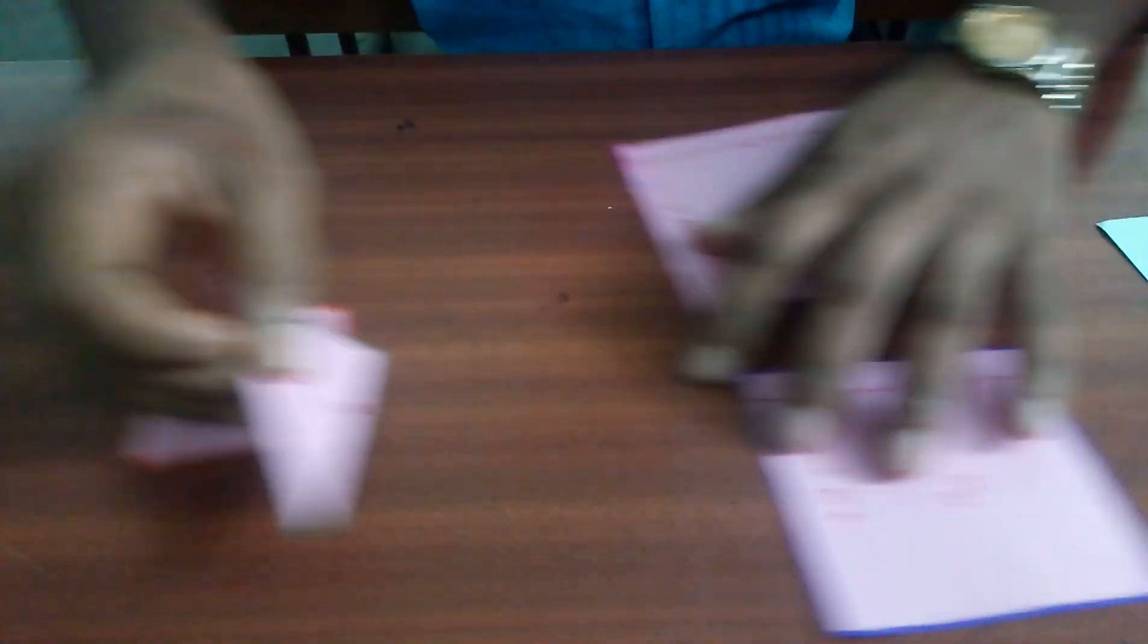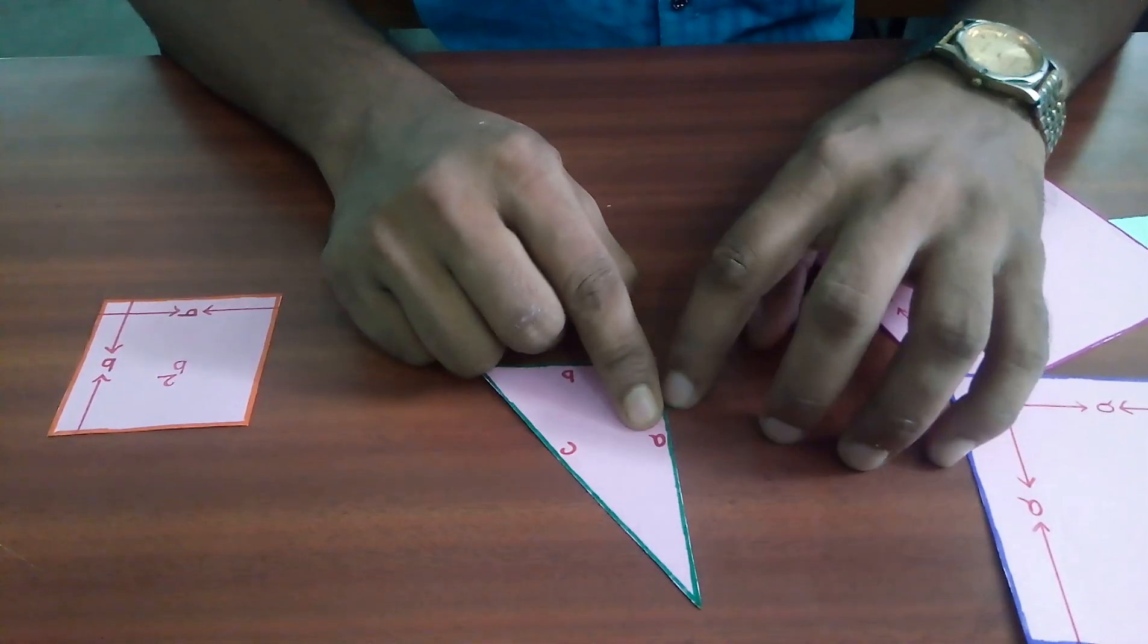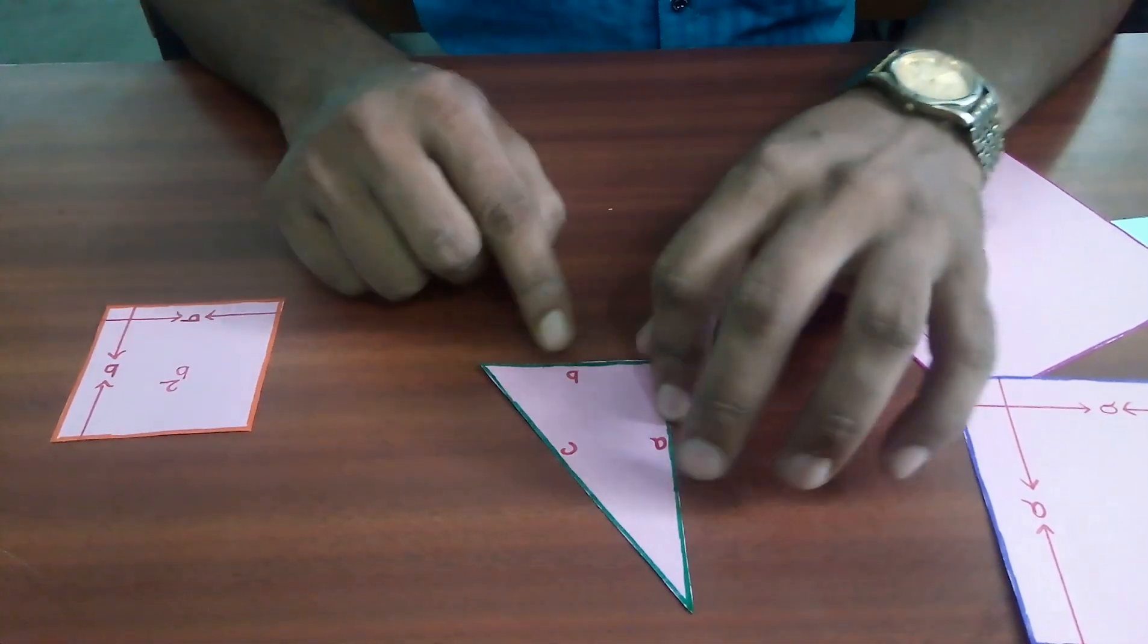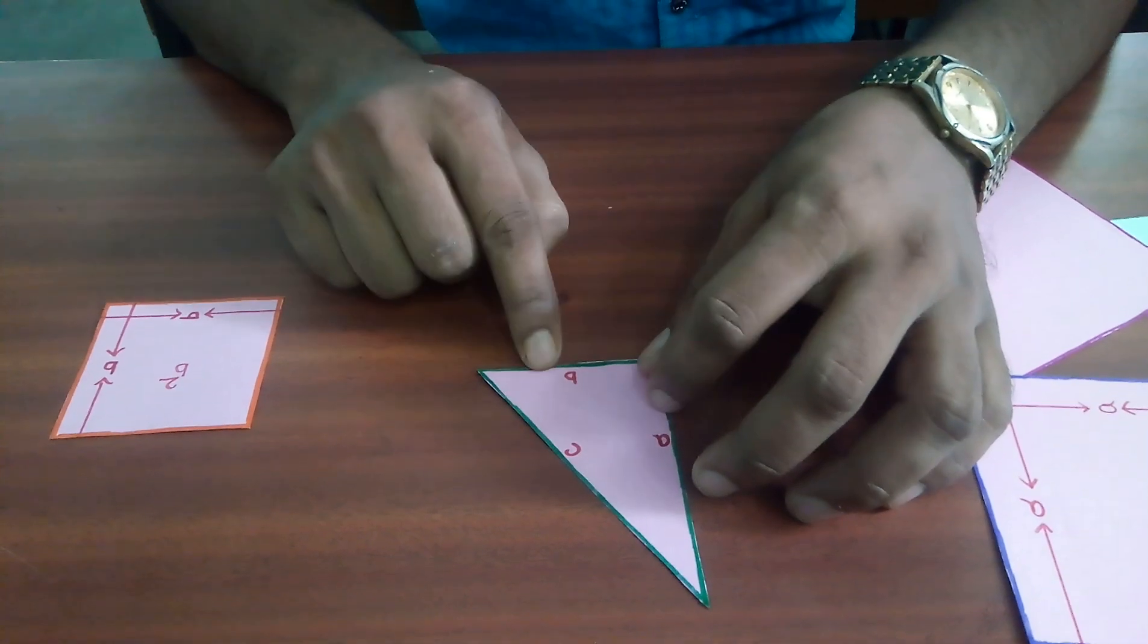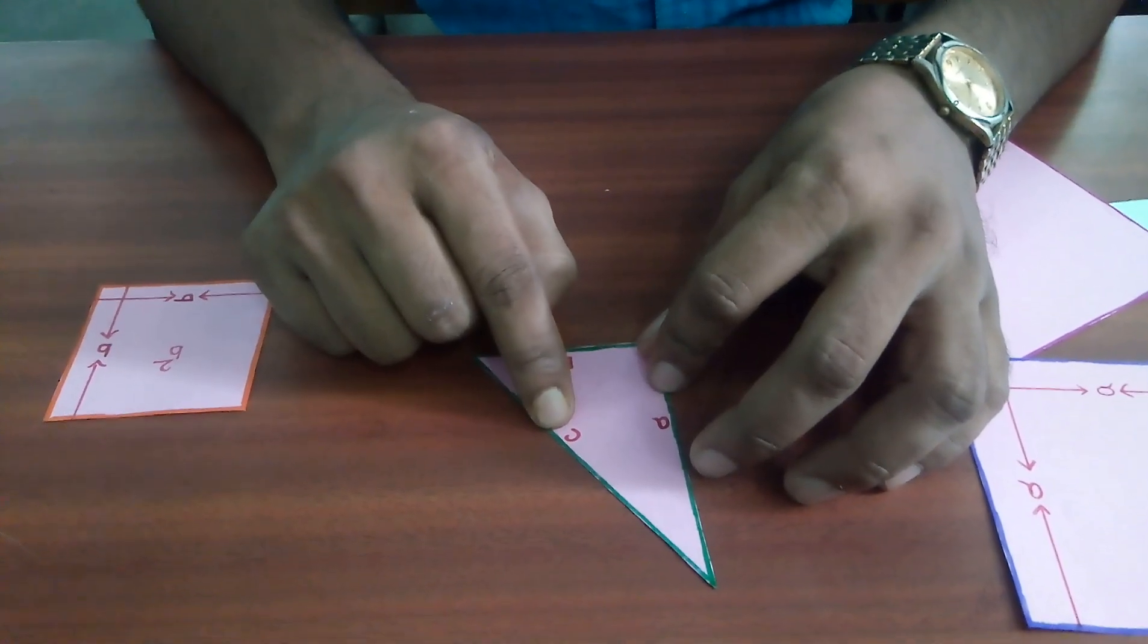So, here for this triangle, A square is the square of one side, B square is the square of another side and C square is the square of the hypotenuse.